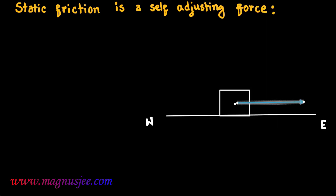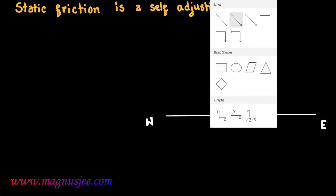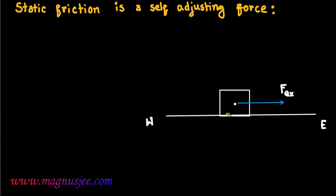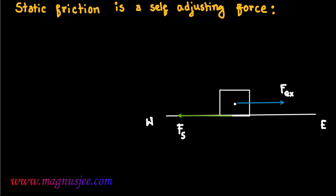An external force Fex is acted towards east. In that case, the limiting friction Fs will be acting towards west, in the opposite direction of the applied external force.